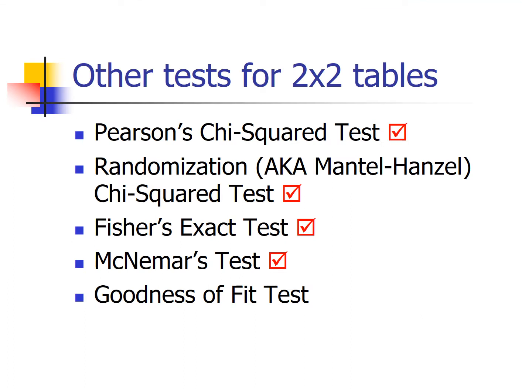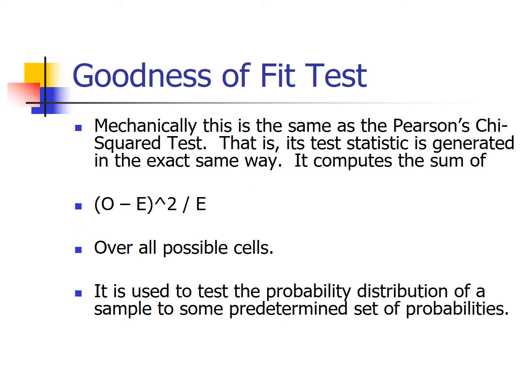Four down, one more to go. The last test we have to talk about is the chi-square goodness of fit test. Mechanically, it works the same as Pearson's chi-square test — that formula of observed minus expected squared over expected appears quite frequently, and here's a second situation where we use it.